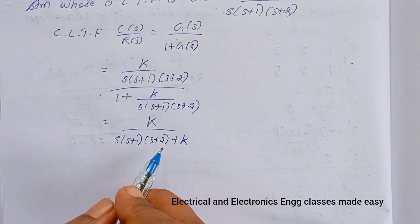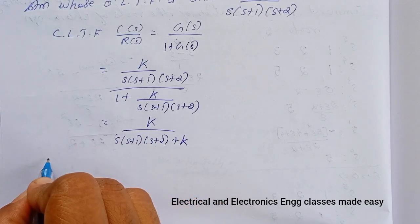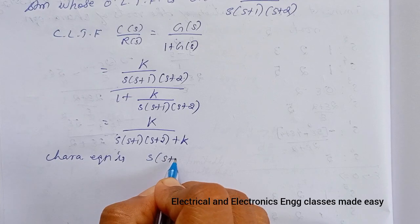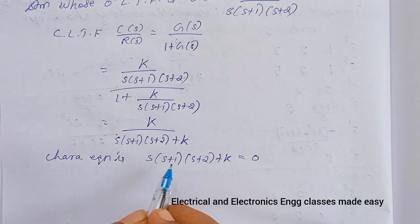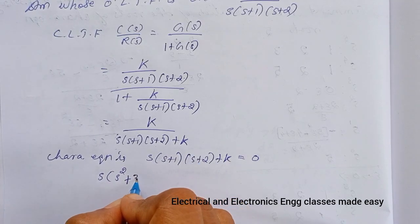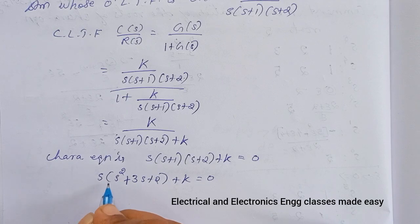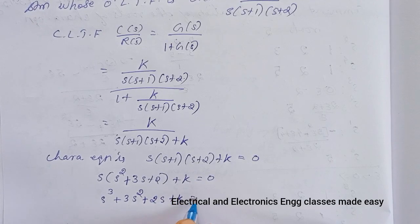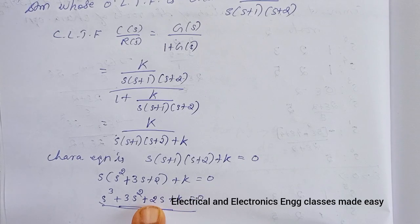The characteristic equation is the denominator of the closed loop transfer function set to zero: s(s+1)(s+2) + K = 0. Opening the brackets: s(s² + 3s + 2) + K = 0, and multiplying through by s gives s³ + 3s² + 2s + K = 0. This is the characteristic equation.